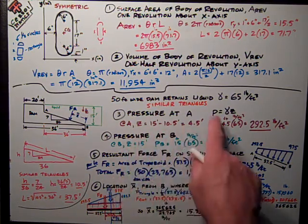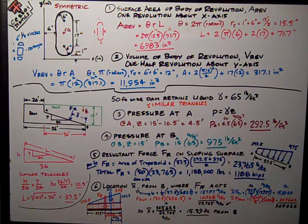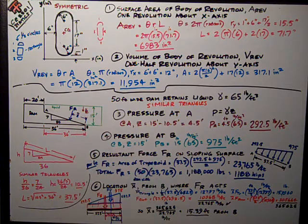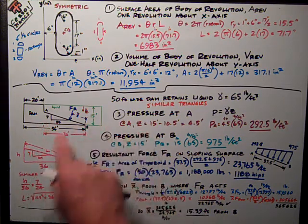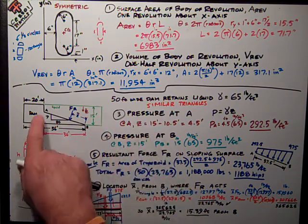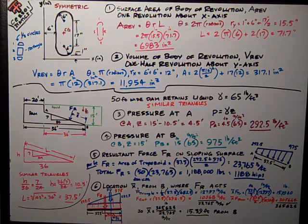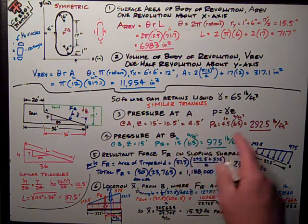The pressure at A, we're given on the equation sheet, the pressure at any point is just gamma times Z, the depth from the surface. So at A, the Z distance is 15 feet, the total height of the liquid, minus 10.5 feet, the height of the vertical portion of the slope. 4.5 feet, so that's a really easy answer. 4.5 times 65 gives me 292.5.